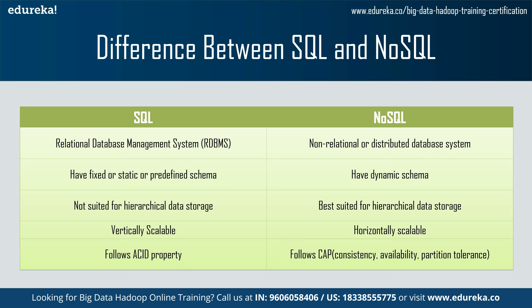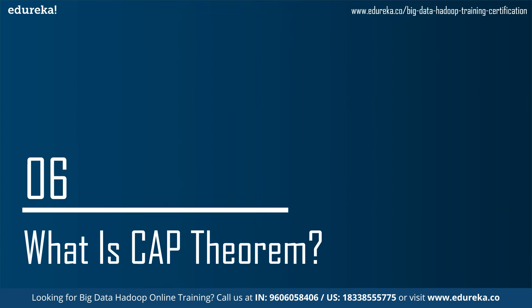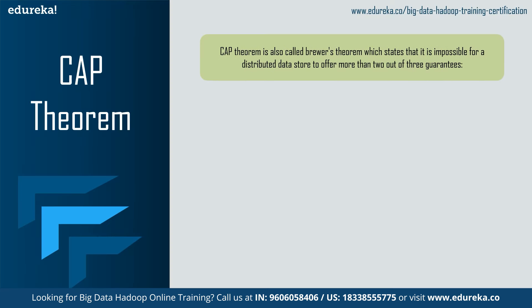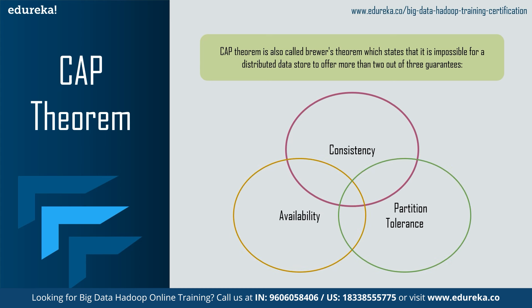SQL databases follow ACID properties — that is Atomicity, Consistency, Isolation, and Durability — while NoSQL databases follow the CAP theorem, that is Consistency, Availability, and Partition Tolerance. CAP theorem is also called Brewer's theorem and states that it is impossible for a distributed data store to offer more than two out of three of these guarantees. Some NoSQL databases offer consistency and partition tolerance while some offer availability and partition tolerance, but partition tolerance is common as NoSQL databases are distributed in nature.